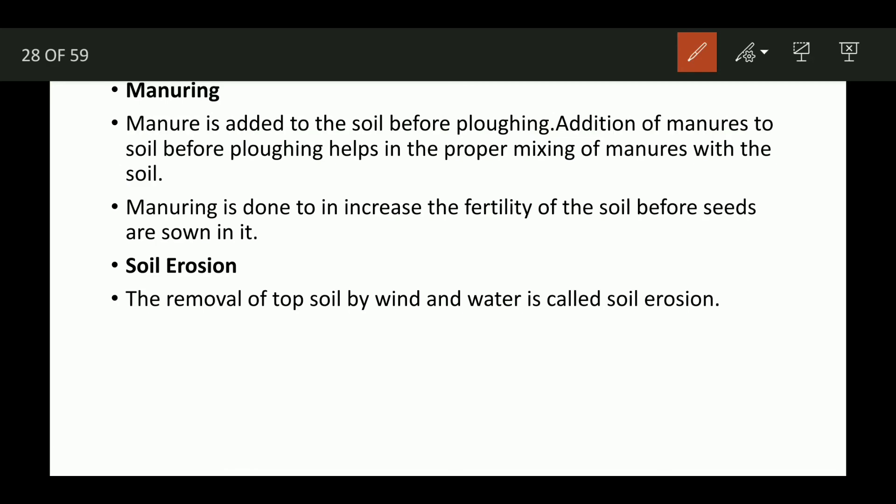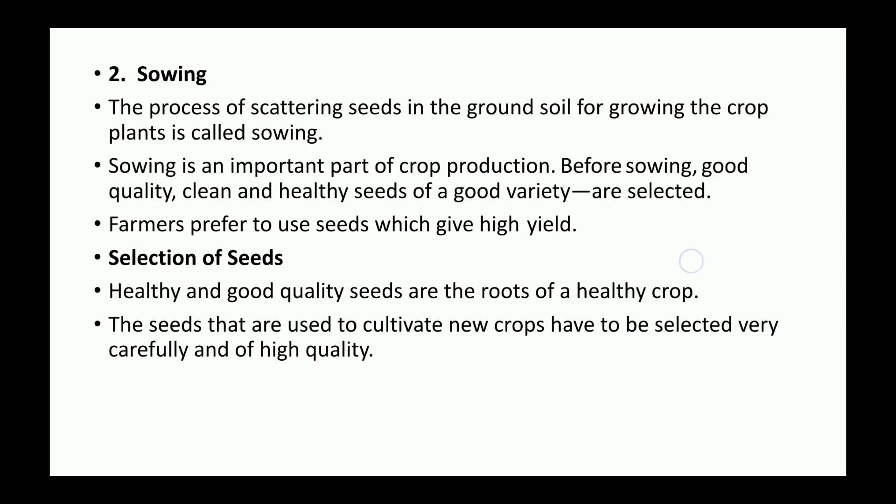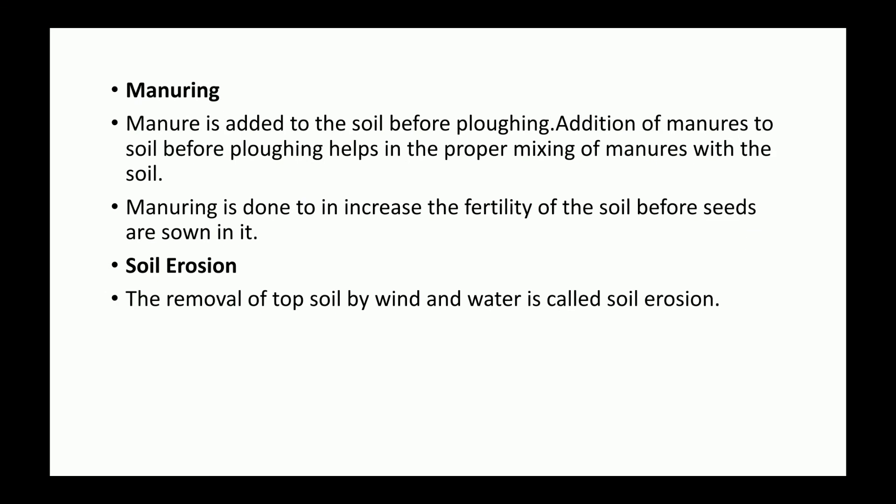One important definition: soil erosion is the removal of top soil by wind and water. You can expect this definition in a one-mark question. In the next video lecture, we will discuss the soil further. Thank you very much. Like, subscribe and share with everyone. Thank you.